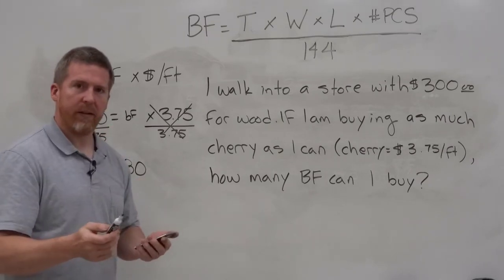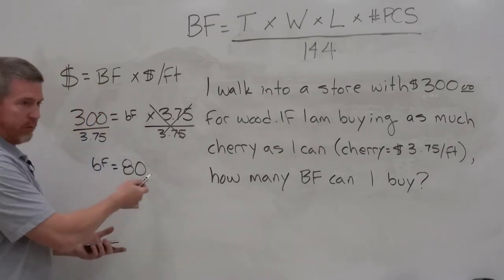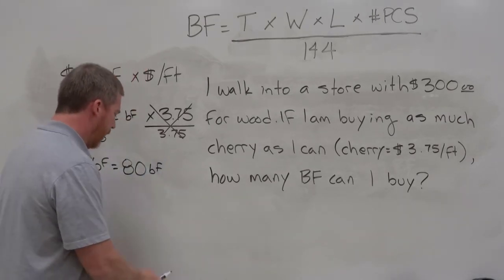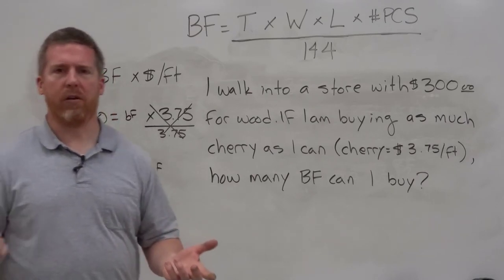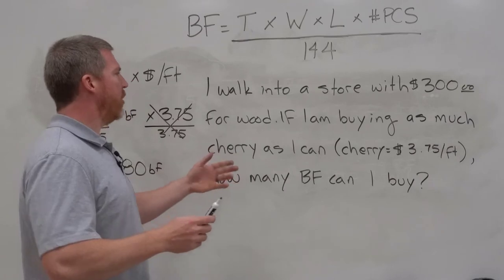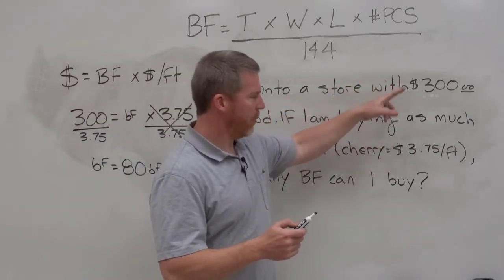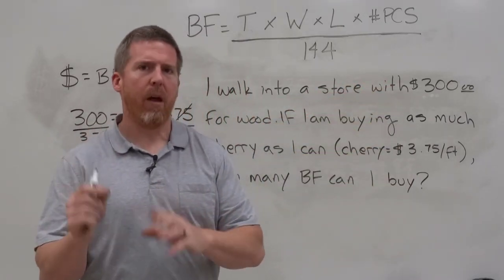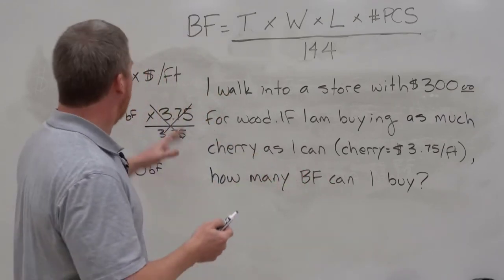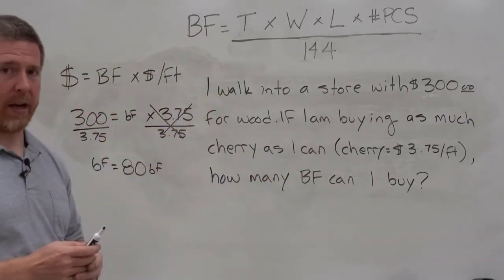Now I can take my calculator and actually work this out. And when I do 300 divided by 3.75, I get 80. So board feet is equal to 80. What? Board feet. That's the unit. That's what we're looking for. So I can walk out of the store with 80 board feet of lumber. And that will use up all of my $300. But for this question, with only two variables, you're going to either multiply them or you're going to divide them. You need to read it carefully so you'll remember which is which so you get the right answer.